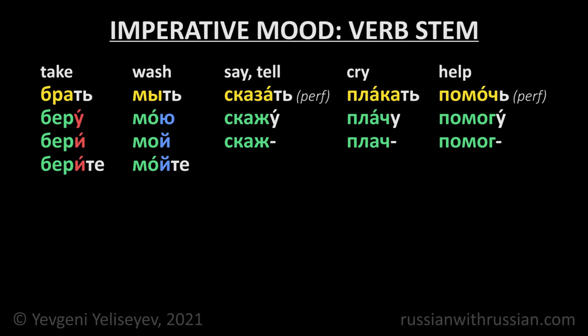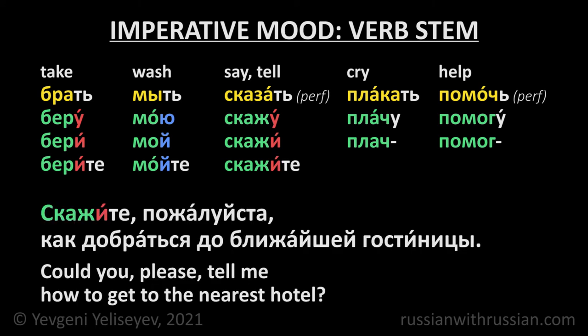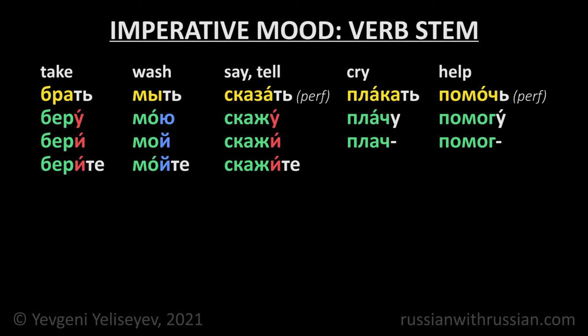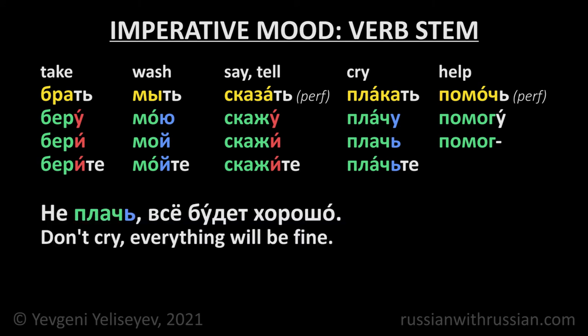Я скажу — the ending is stressed, so the informal imperative form ends in the stressed И: Скажи, Скажите. Скажите, пожалуйста, как добраться до ближайшей гостиницы — Could you please tell me how to get to the nearest hotel? Я плачу — the ending is unstressed and the stem Плач ends in a consonant, so the informal imperative form ends in soft sign: Плачь, Плачьте. Не плачь, всё будет хорошо — Don't cry, everything will be fine.